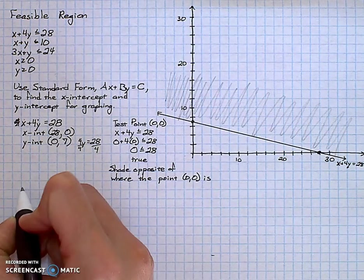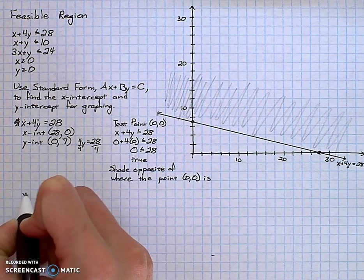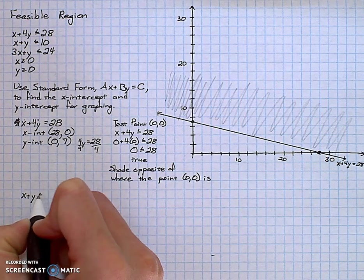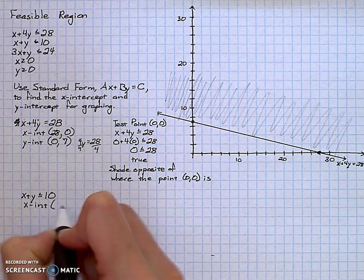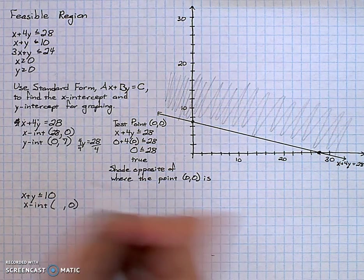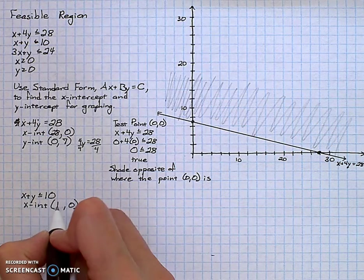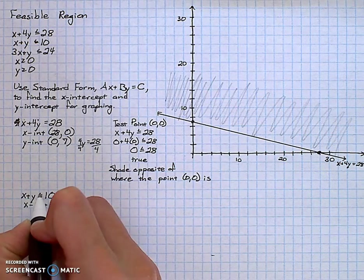Second inequality reads, x plus y is less than or equal to 10. The x-intercept is found by putting 0 in for y. I'd get x equals 10. My apology, I should have changed that to equals.